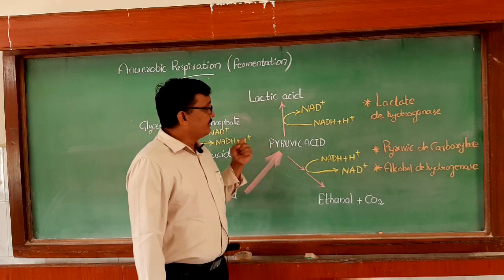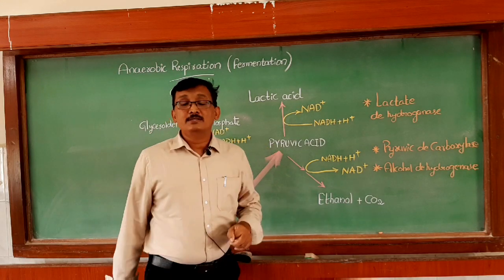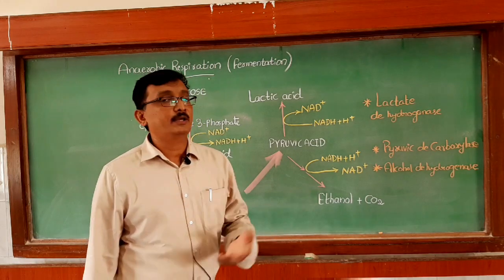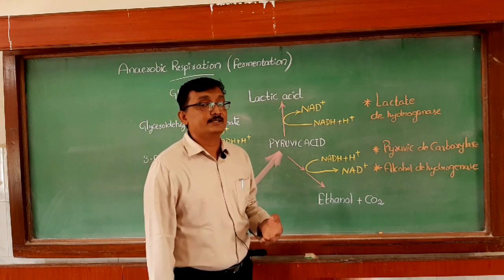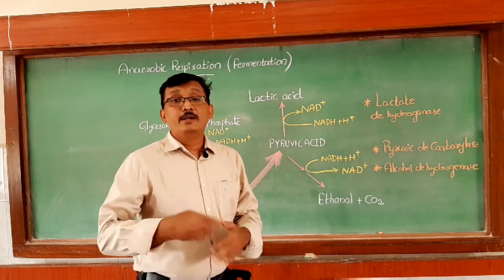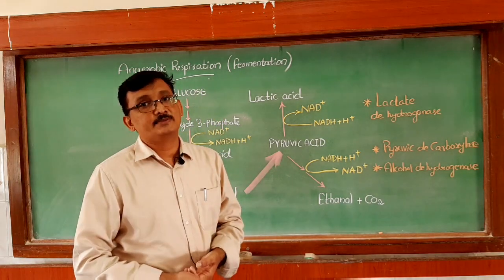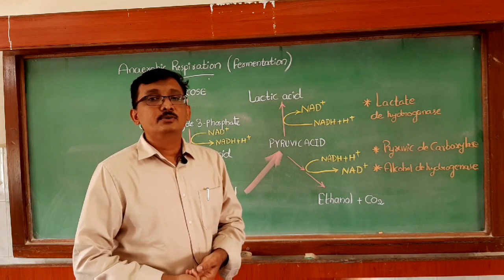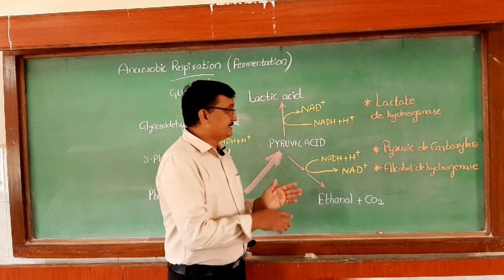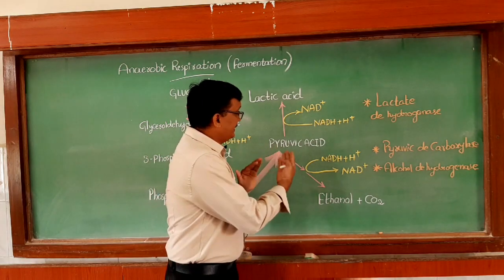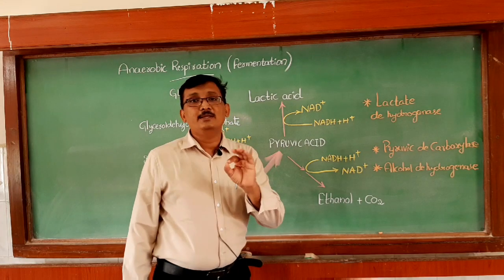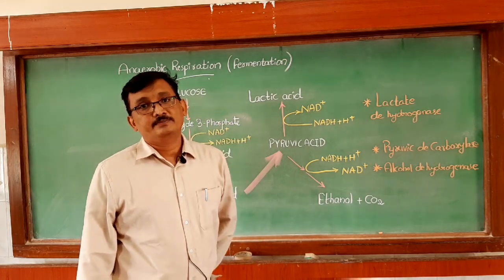This pyruvic acid molecule, whenever there is no oxygen — that means oxygen is not available — it is not able to enter the mitochondria to undergo complete oxidation by the process of the Krebs cycle. So it will remain only in the cytoplasm and will participate in further partial oxidation.